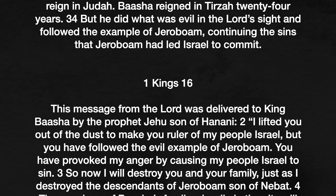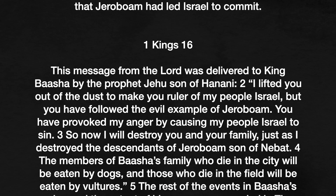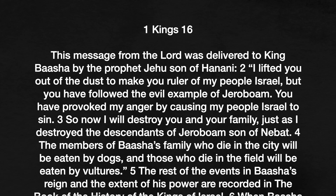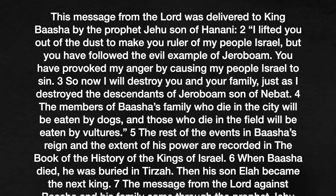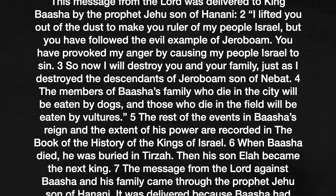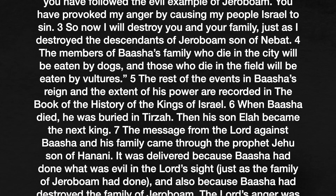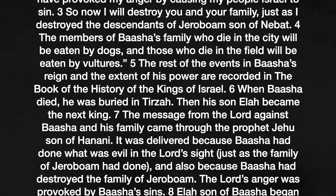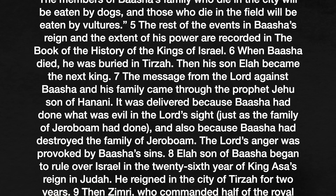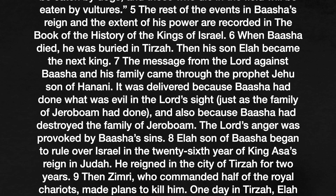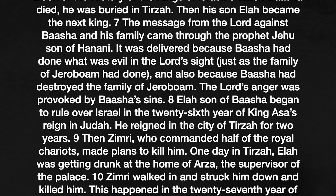1 Kings 16: This message from the Lord was delivered to King Baasha by the prophet Jehu, son of Hanani: 'I lifted you out of the dust to make you ruler of my people Israel, but you have followed the evil example of Jeroboam. You have provoked my anger by causing my people Israel to sin. So now I will destroy you and your family, just as I destroyed the descendants of Jeroboam, son of Nebat. The members of Baasha's family who die in the city will be eaten by dogs, and those who die in the field will be eaten by vultures.' The rest of the events of Baasha's reign and the extent of his power are recorded in the book of the history of the kings of Israel. When Baasha died, he was buried in Tirzah. Then his son Elah became the next king. The message from the Lord against Baasha and his family came because Baasha had done what was evil in the Lord's sight, just as the family of Jeroboam had done, and also because Baasha had destroyed the family of Jeroboam. The Lord's anger was provoked by Baasha's sins.